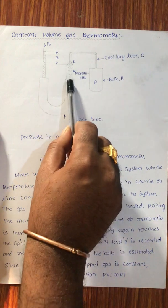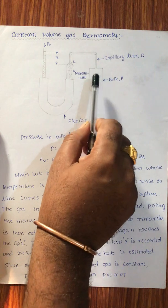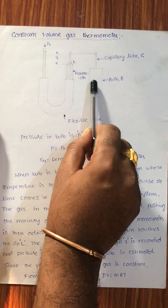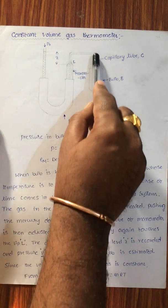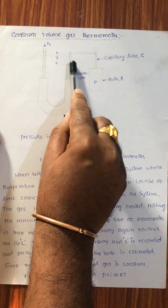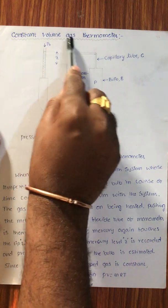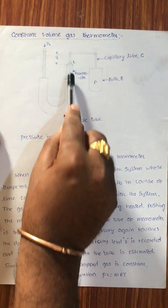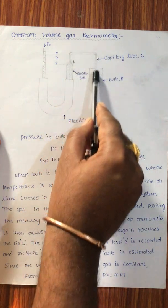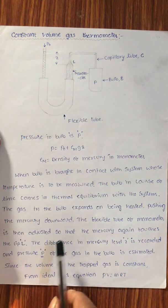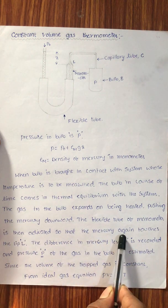When the mercury goes and touches lip L again, the gas in the capillary tube and bulb returns to the same level. First the gas expands so that the mercury goes down and some space is occupied by the gas — volume increases. To maintain constant volume, we adjust the flexible tube so that the mercury touches lip L again, and the volume of the gas remains constant.